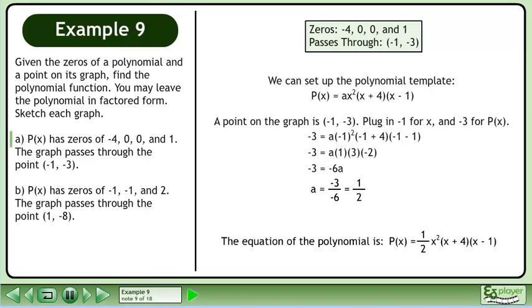The equation of the polynomial is P(x) = (1/2)(x²)(x + 4)(x - 1).